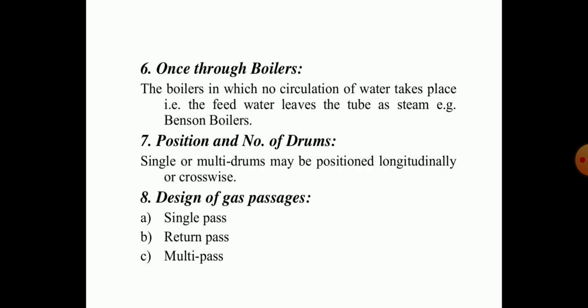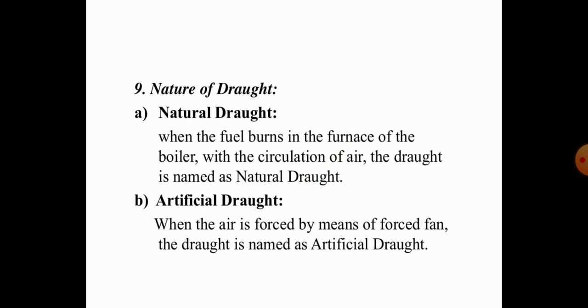Based on position and number of drums, single or multiple drums may be positioned longitudinally or crosswise, and boilers are divided accordingly. The design of flue gas passages may be single pass, return pass, or multi-pass. Natural and artificial draughts are two defining properties of boilers. When fuel burns in the furnace with natural air circulation, the draught is called natural draught. When air is forced by means of a fan or blower, it is called artificial draught.